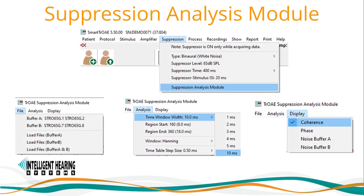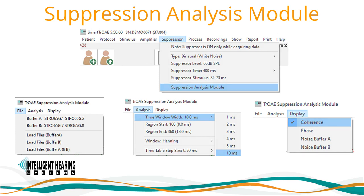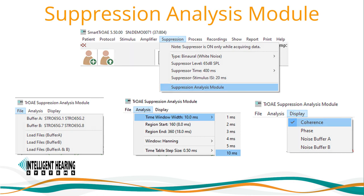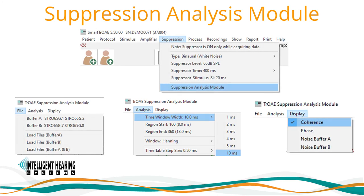Once the data is acquired on the main screen, you can go to the suppression menu to access the suppression analysis module. Within this module, you can load recordings from the file menu into two different buffers for comparison. Suppression analysis is typically done within a 10 millisecond window set from 8 milliseconds to 18 milliseconds. Analysis settings can be set in the analysis menu. There are various display options including response comparisons, coherence, phase, noise buffers, and frequency and time tables.